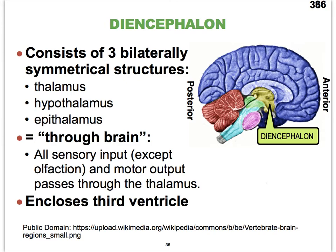It's always really important to remember that the whole brain, anatomically speaking, is bilaterally symmetrical. So we're really only seeing one half of the diencephalon here. In between these two hemispheres is where we find our third ventricle, which is filled with cerebrospinal fluid.